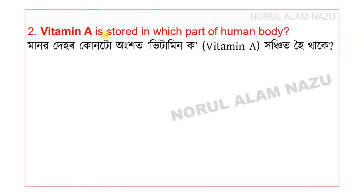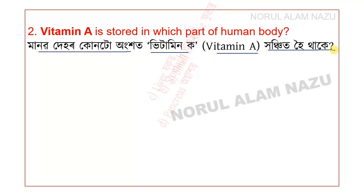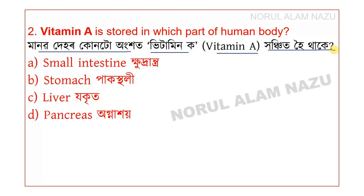Question: Vitamin A and Vitamin K are stored in which part of the human body? Options include the small intestine, stomach, liver, and pancreas. Vitamin A is stored in the liver.